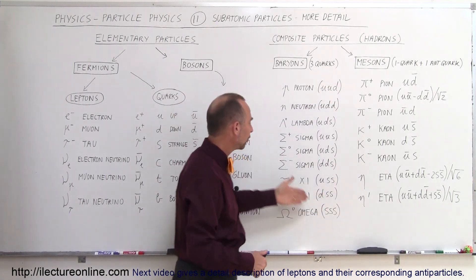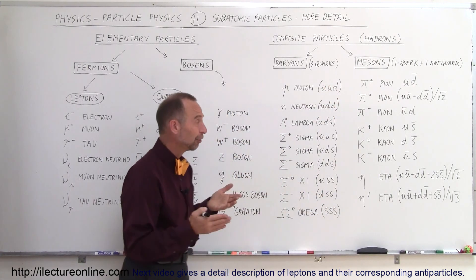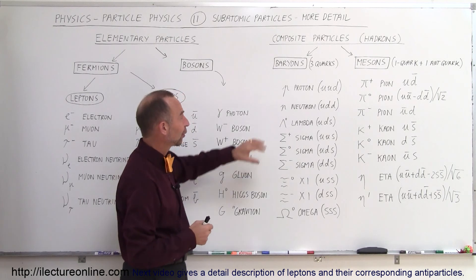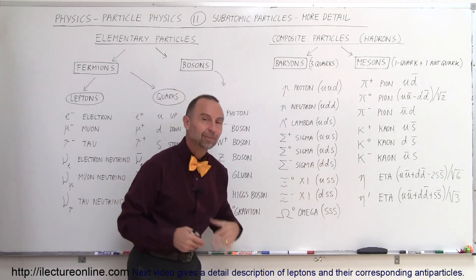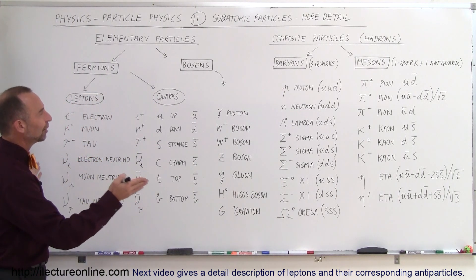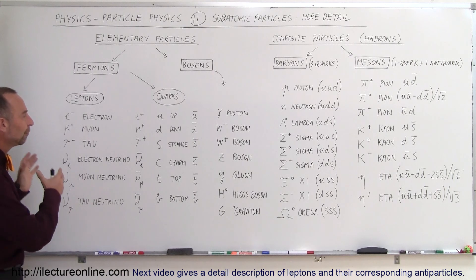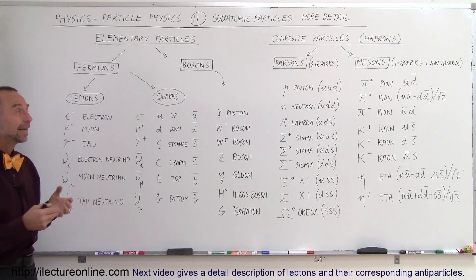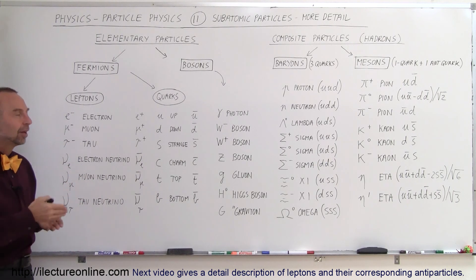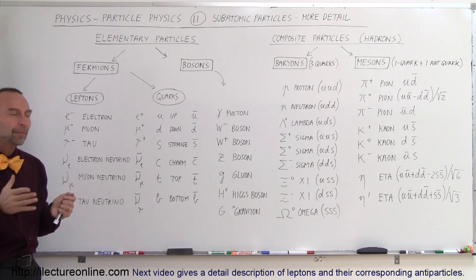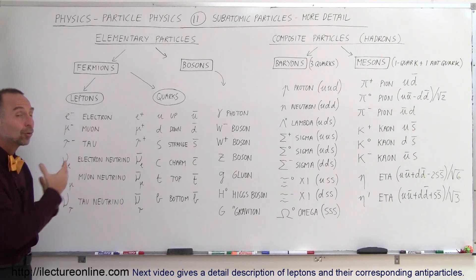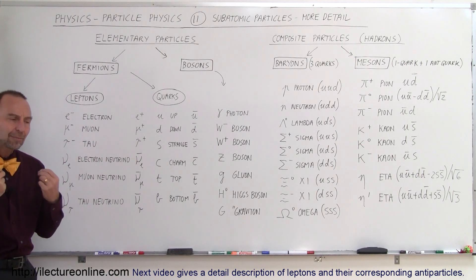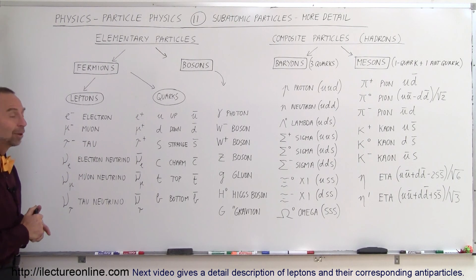These are all unstable particles — they only last for a very small fraction of a second before disintegrating into something different. But they make up the matter universe, with the stable particles making up stable matter and everything else making up what we call the temporary matter of the universe. This gives a nice, more detailed picture of the various kinds of particles and how they are classified. In later videos, we'll show more detail about the specific properties by which we understand how these particles interact with each other.